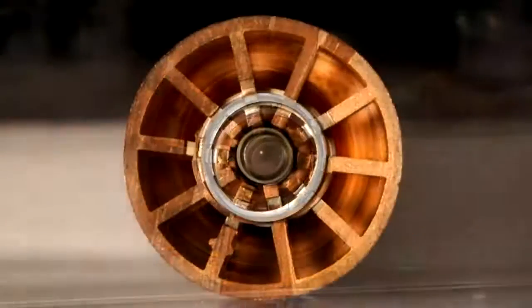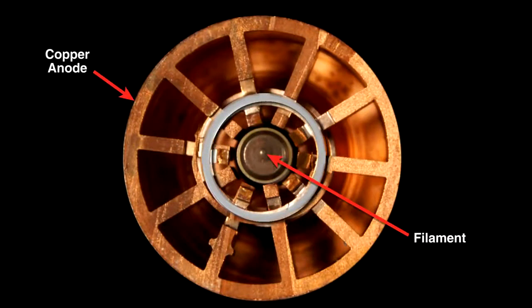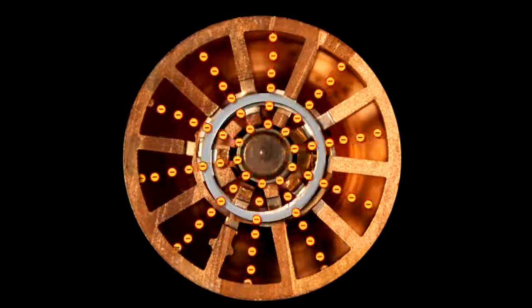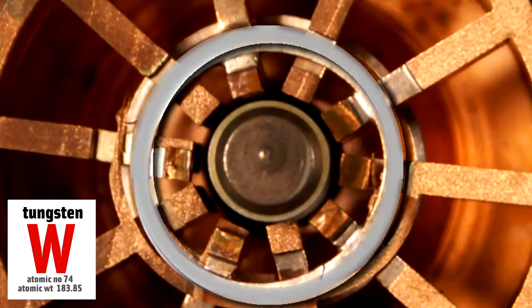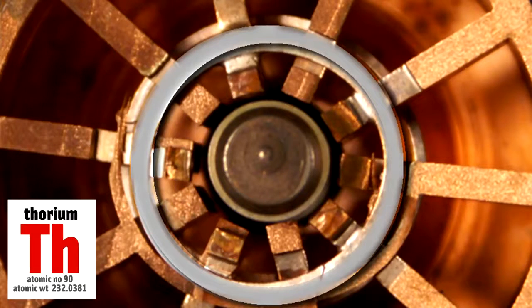You apply a large voltage across both the inner filament and the circular copper outside. This voltage boils electrons off the center filament and they fly toward the circular copper section. The filament is made from tungsten and thorium. Tungsten because it can withstand high temperatures and thorium because it's a good source of electrons.